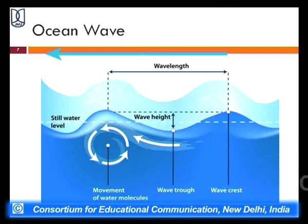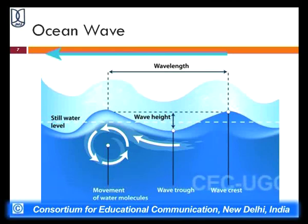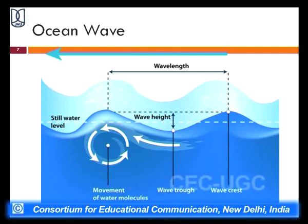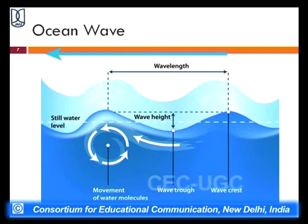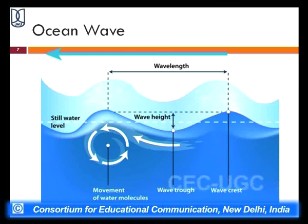What we need to understand is that the movement of ocean waves does not actually displace the water particles involved in the waves. The water particles are circulated within the crest region or the cycle region of the wave forms. The diagram also depicts the wave trough region at the lowest point and the highest point, the wave crest. We will come back to this figure when we talk about wave motions in detail.